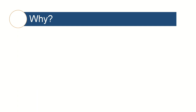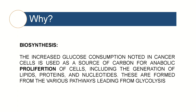The third explanation is something called biosynthesis. Remember that glucose is a 6-carbon simple sugar molecule. The increased glucose consumption in cancer cells is used as a source of carbon for anabolic proliferation of cells, including the generation of lipids, proteins, and nucleotides. These are formed from the various pathways leading from glycolysis. Basically, this is saying that cancer cells also use the glycolysis pathway to better utilize glucose to make components necessary for the proliferation of new cancer cells.